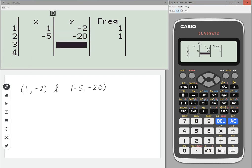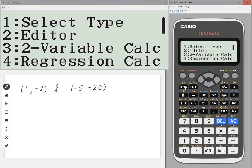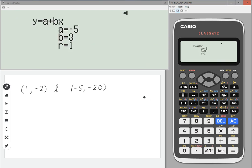Now, once you've done that, press option, and then number four, regression calculation. What it does is it tells you the a and the b in the equation. So y equals a is minus five plus b, which is three x. So it's minus five plus three x, and that's the equation of your line.